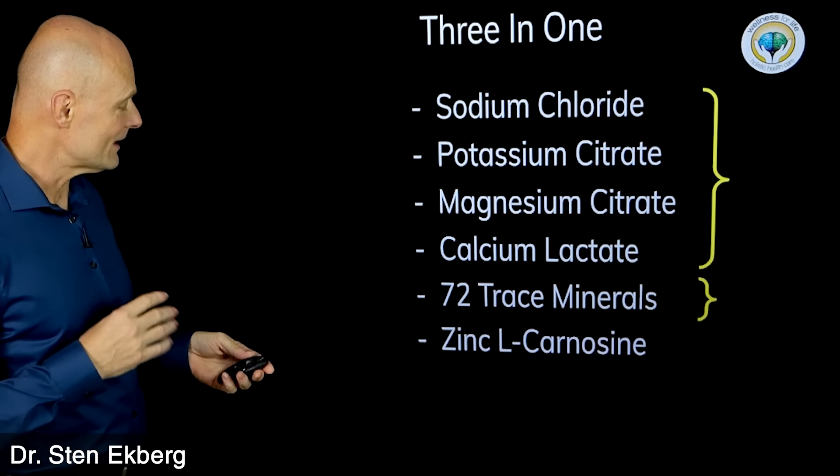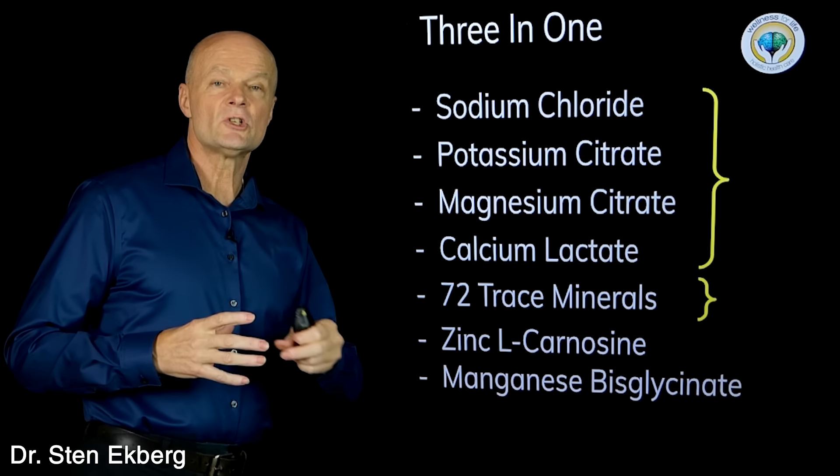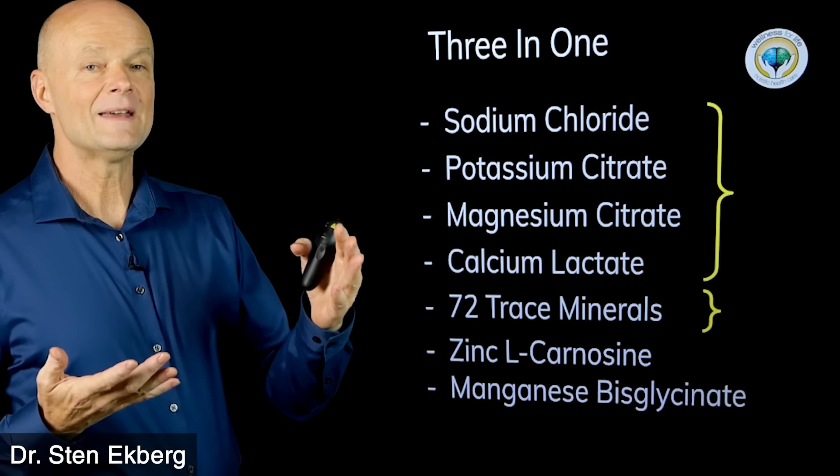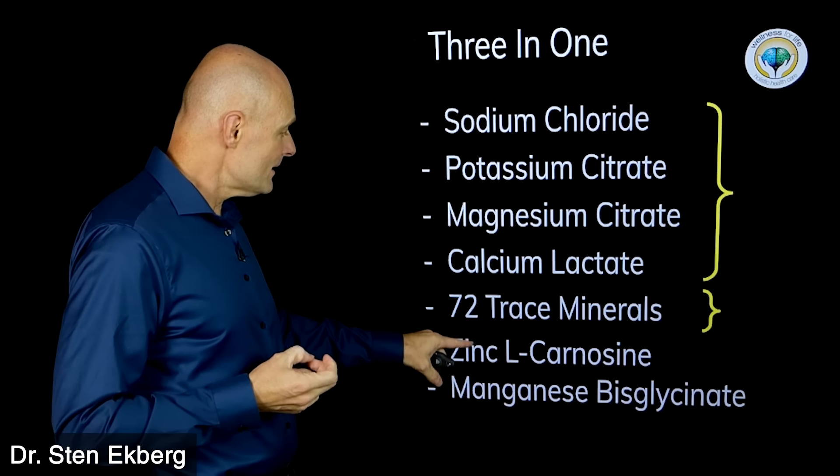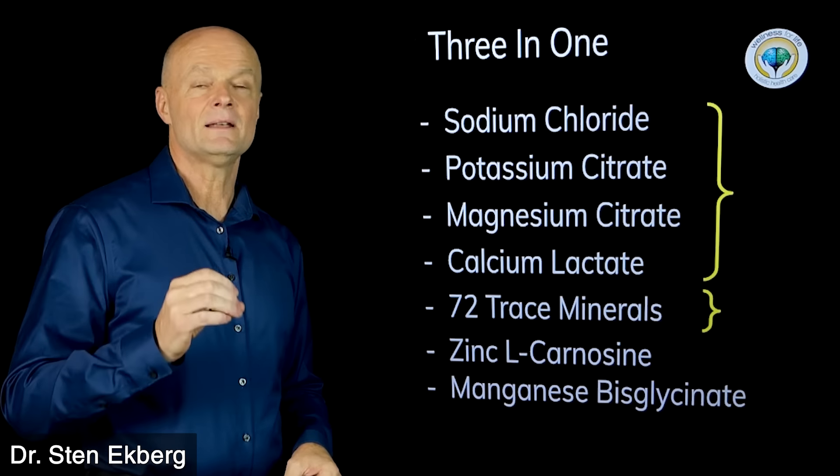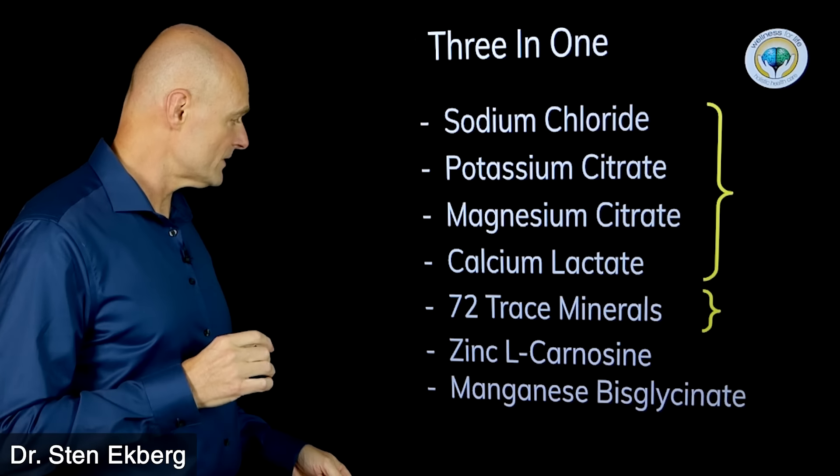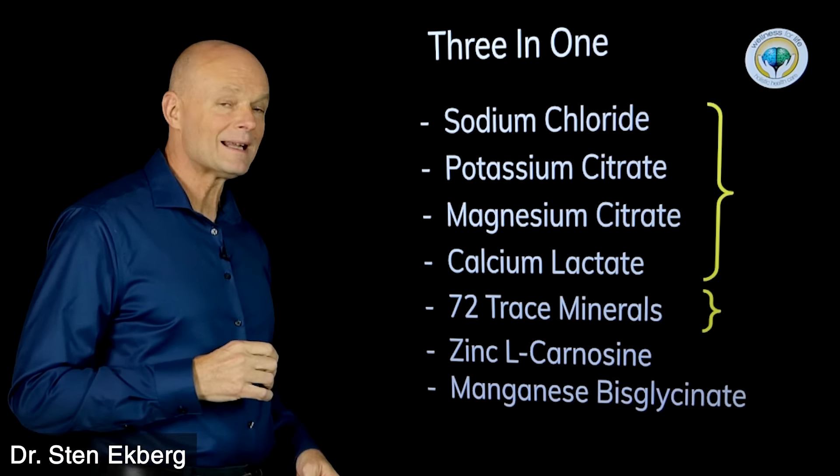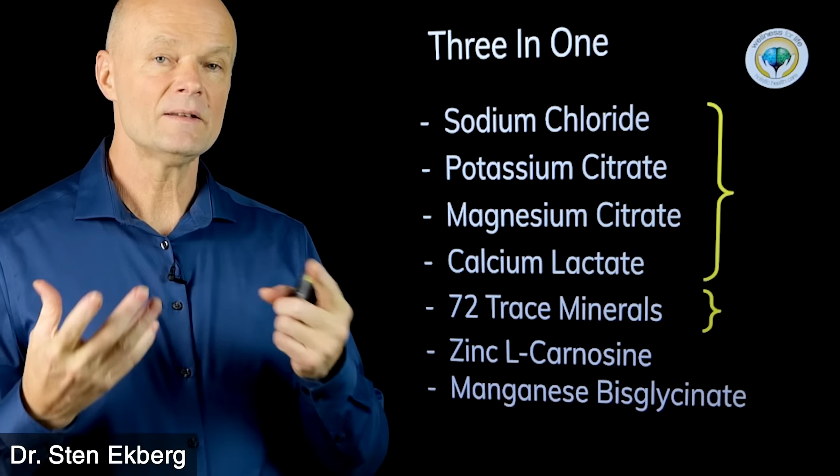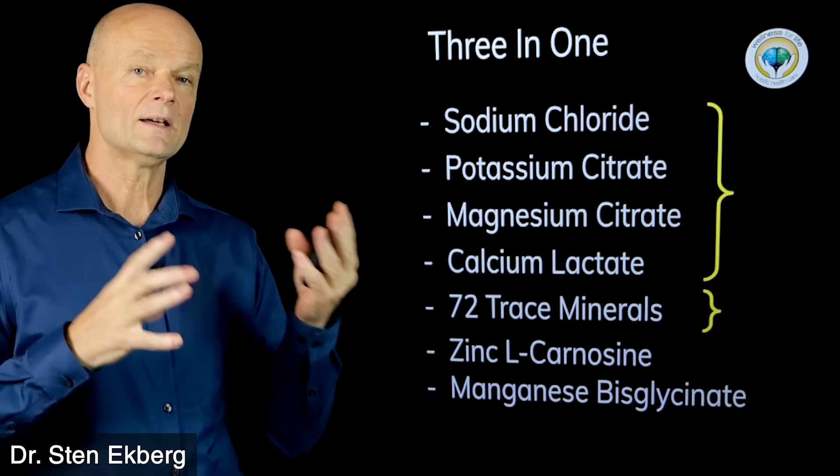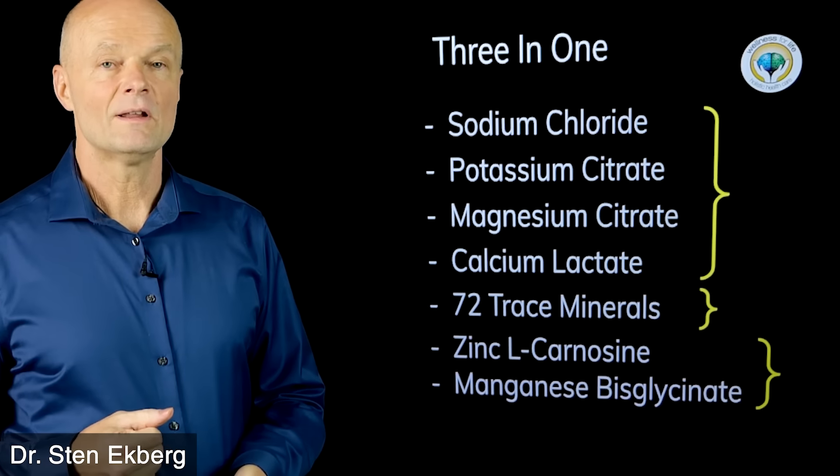So potassium citrate, magnesium citrate, and calcium lactate, which again is the usable form, and then you also get the other 72 trace minerals. So the first supplement part is like the electrolytes, and then the second part are the trace minerals. And then the last part is I added in a couple of bonuses, which is zinc L-carnosine, which has been shown to be more bioavailable, like three to four times more bioavailable than regular dietary zinc. It is critical in gut healing.